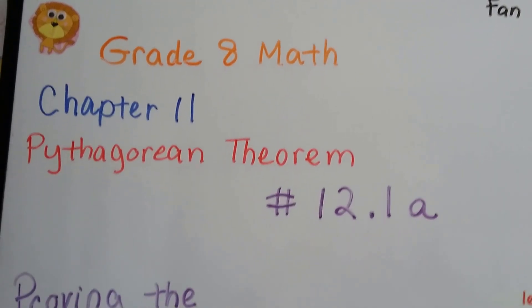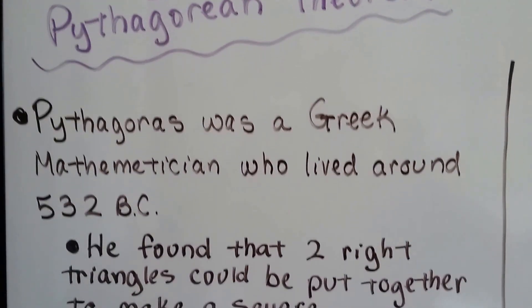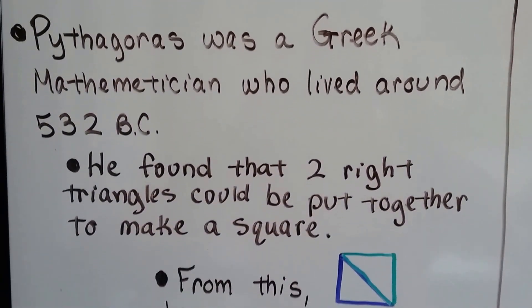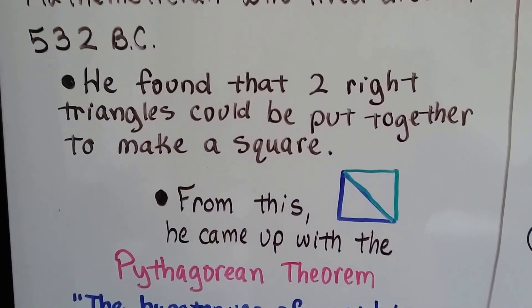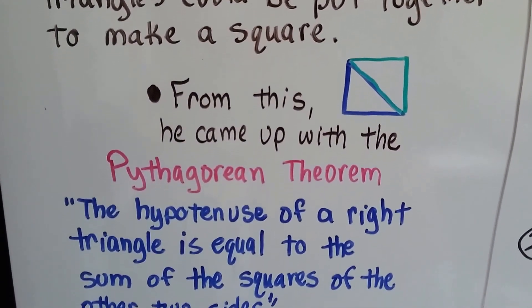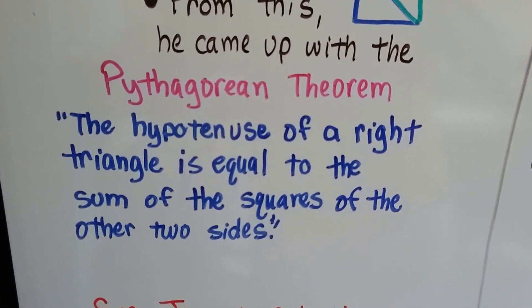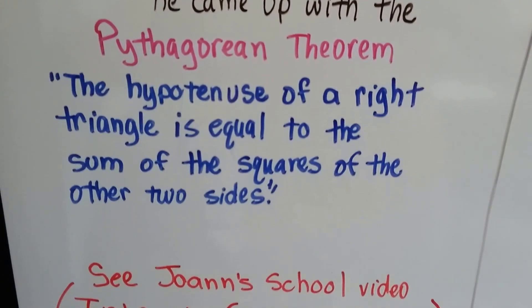Grade 8 Math, number 12.1a, Proving the Pythagorean Theorem. Pythagoras was a Greek mathematician who lived around 532 BC, and he found that two right triangles could be put together to make a square. From this he came up with the Pythagorean Theorem, and that says the hypotenuse of a right triangle is equal to the sum of the squares of the other two sides.